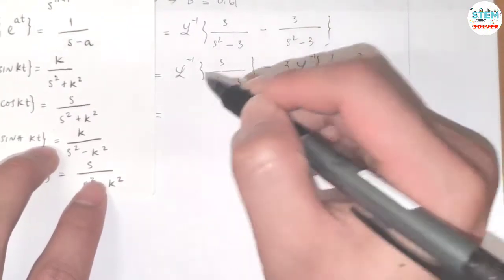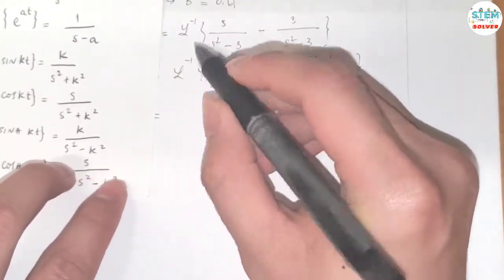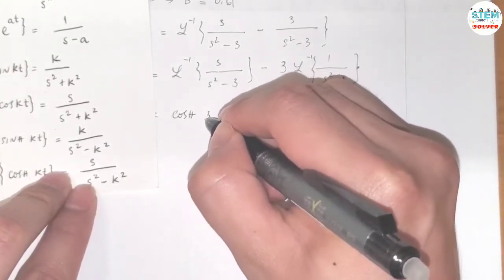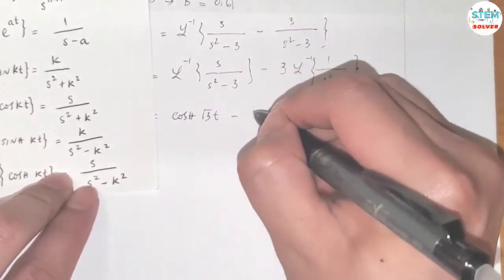So this one, the L inverse of s over s squared minus 3 is equal to hyperbolic cosine of square root of 3 t, minus...